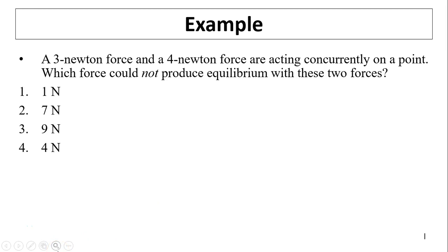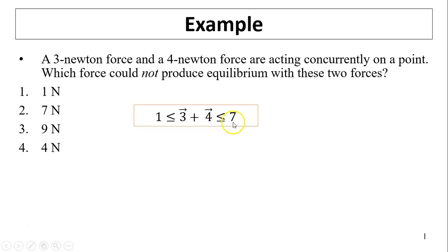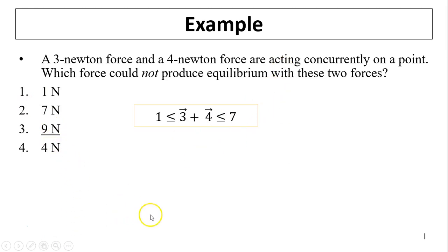Another example: a 3-newton force and a 4-newton force are acting concurrently on a point. Which force could not produce equilibrium with these two vectors? A 3 and 4 newton combination can produce a resultant less than or equal to 7 and greater than or equal to 1. Which option is not in that range? It's 9 newtons — 9 newtons is out of the range and cannot produce equilibrium.